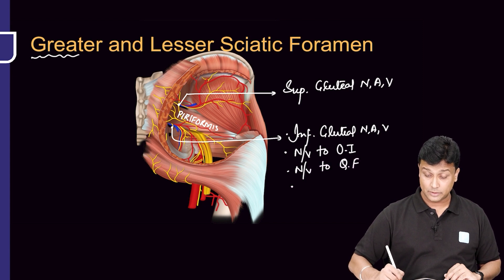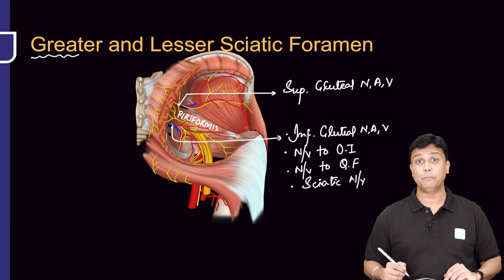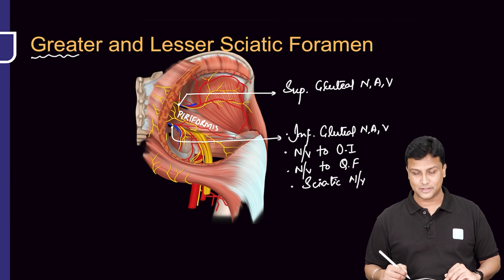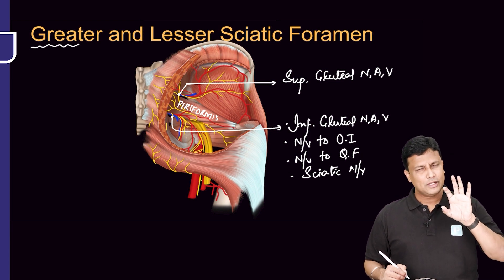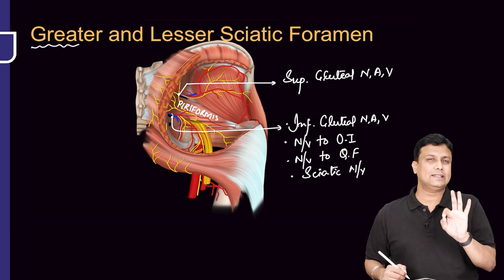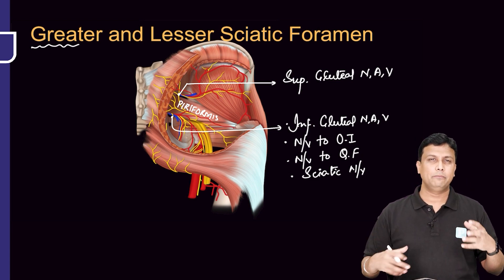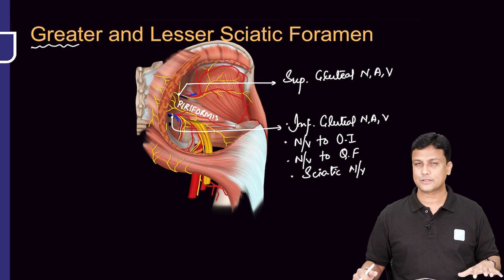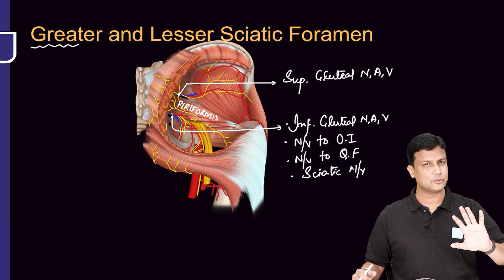In the very beginning I taught you about the sciatic nerve, so the sciatic nerve is also going to pass through the greater sciatic foramen but below the piriformis. This is an easy thing — don't try to make some mnemonic like A, B, C, D. It is very conceptual.